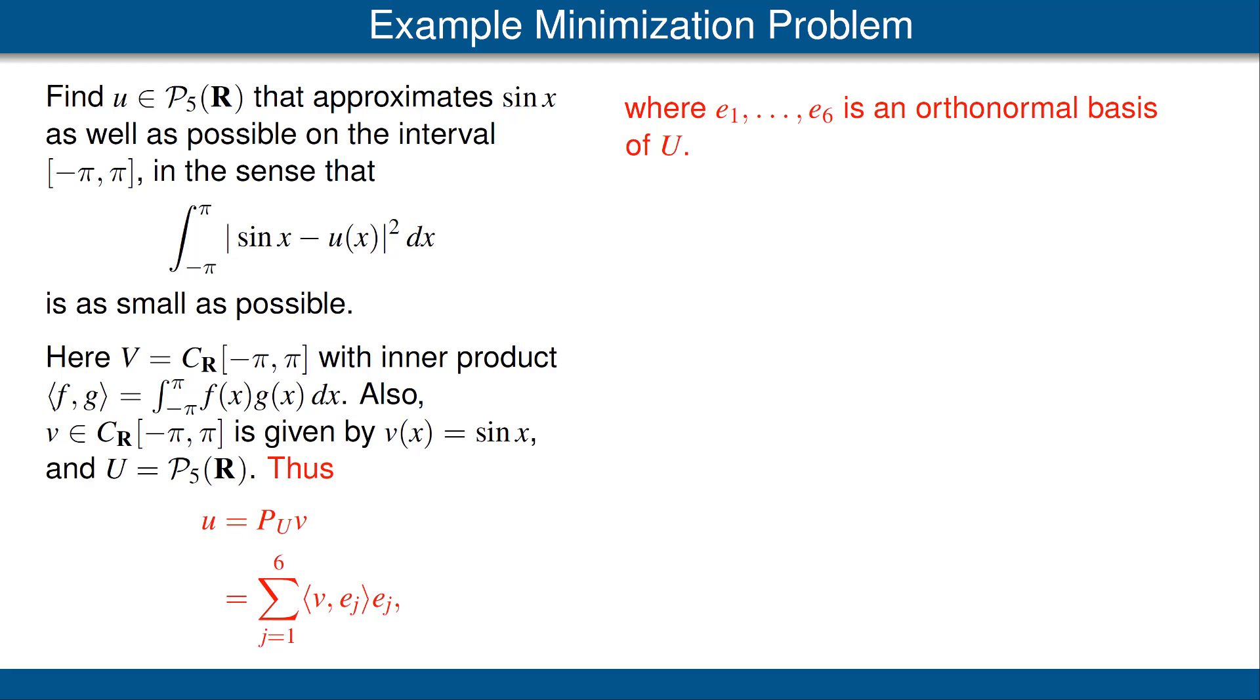Notice the sum goes from j equals 1 to 6, where e_1 up to e_6 is an orthonormal basis of U. The reason for 6 is that the vector space P_5(R) has dimension 6.